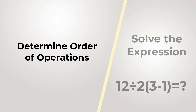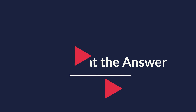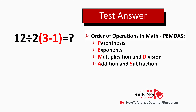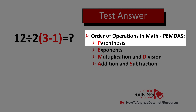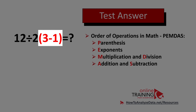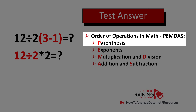All you need to determine is which operation to do first, second, and third. Do you think you know the answer? The order of operations in math tells us that the first expression we need to solve is in parentheses. We first need to calculate 3 minus 1, and obviously the answer is 2.